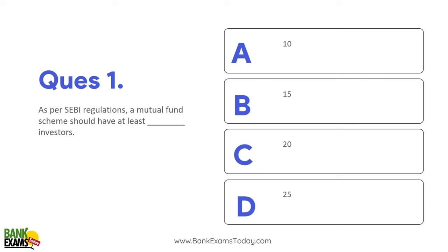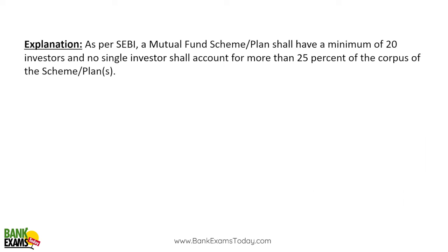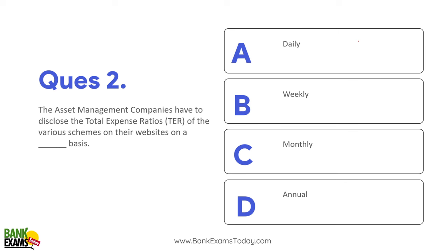Question 1: As per SEBI regulations, a mutual fund scheme should have at least how many investors? The answer is minimum 20 investors. There should be a minimum of 20 investors in any mutual fund scheme, and a single investor should not hold more than 25% of the corpus.